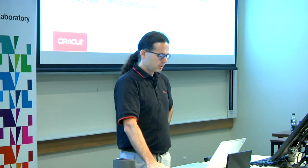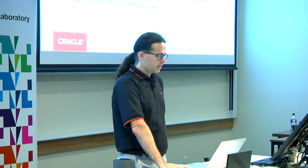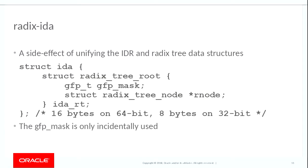My solution is actually slightly better than what Rasmus had proposed — it only occupies eight bytes on 32-bit. I think that given sufficient motivation and time I could have probably got it down to four bytes on 32-bit, because we're only incidentally using the GFP mask. For those who don't know, the GFP mask is how Linux specifies how memory should be allocated. It wasn't really being used for the IDA; the problem was that the radix tree was abusing the GFP mask to store additional information. But we were moving in a different direction so there was no time to make that optimization.